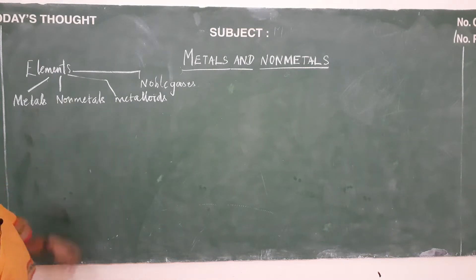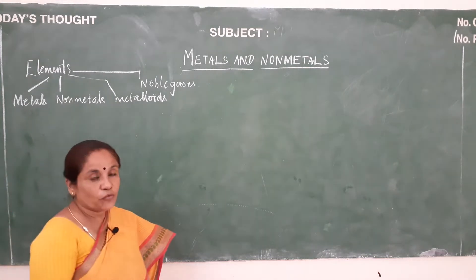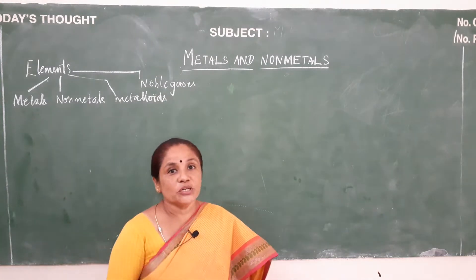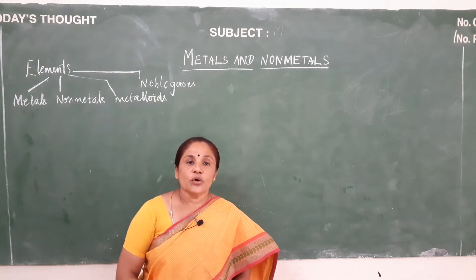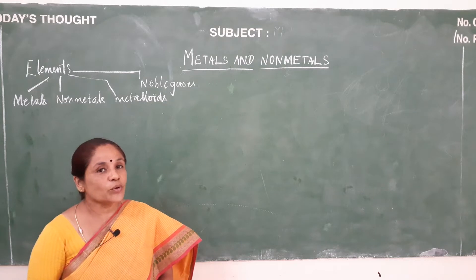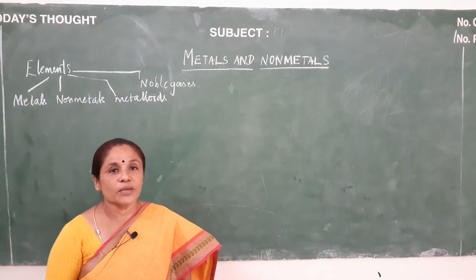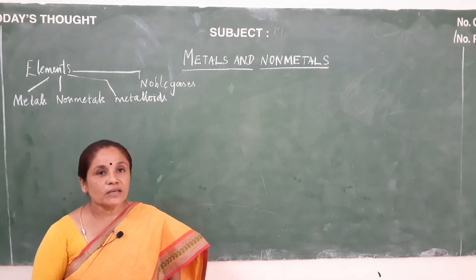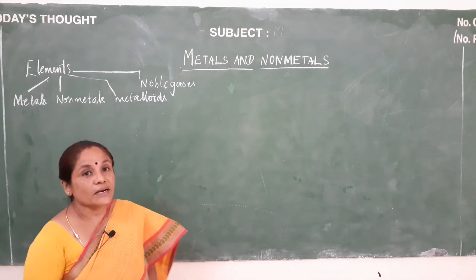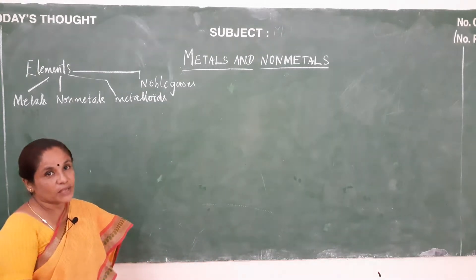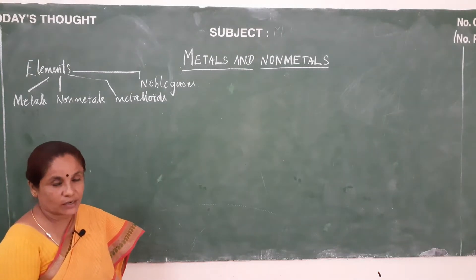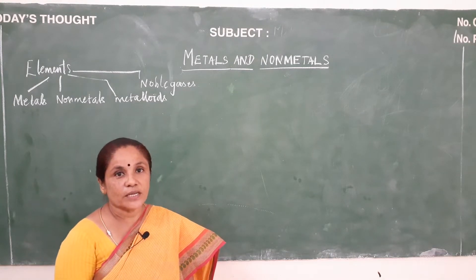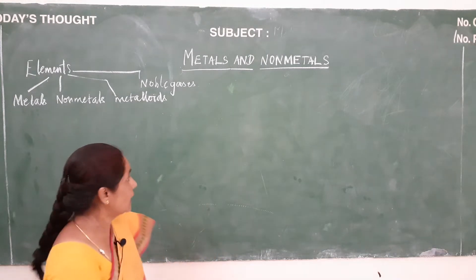Elements are made up of only one kind of atoms. You would have seen the periodic table chart in your chemistry lab. There are 118 elements in the periodic table chart. Now let us see about the physical properties of metals in detail.